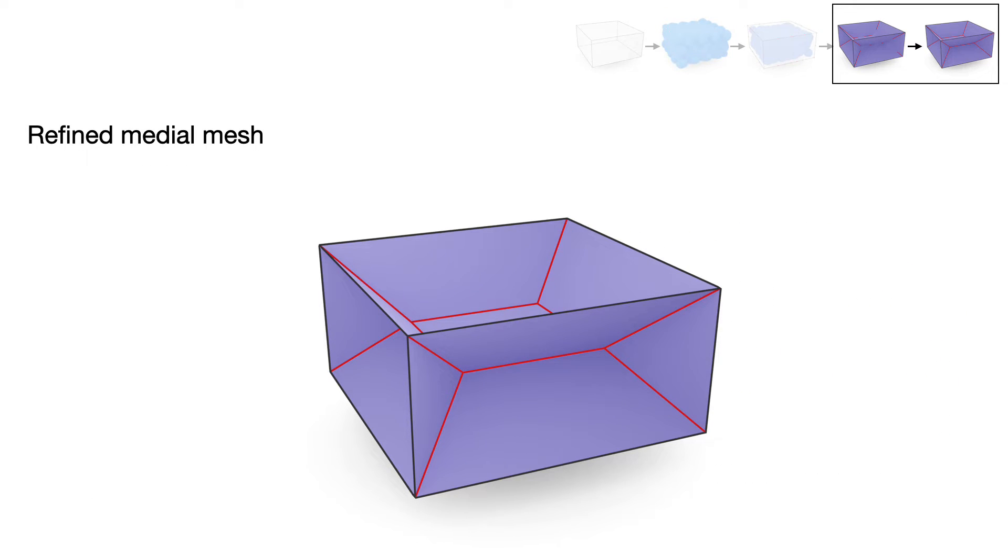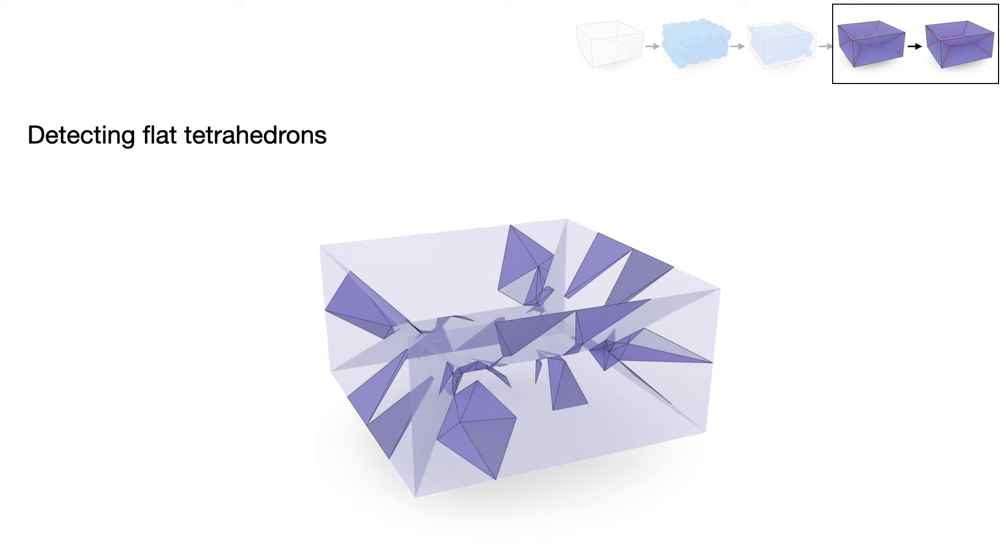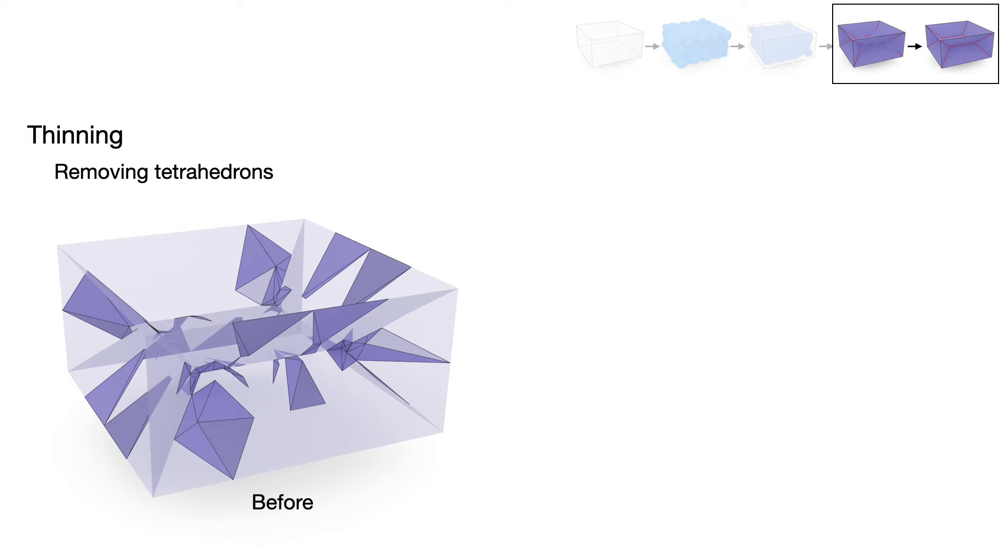Up to now, the refined medial mesh still contains some flat but solid tetrahedrons. We propose a geometry-guided thinning algorithm to rank all triangles of any tetrahedron in the medial mesh using their importance factors.